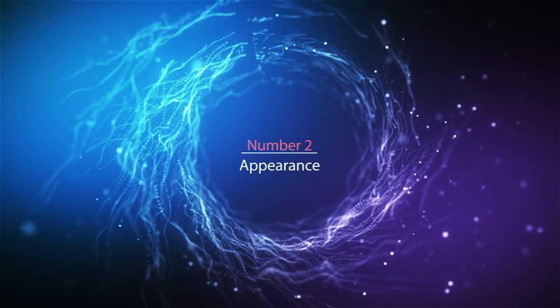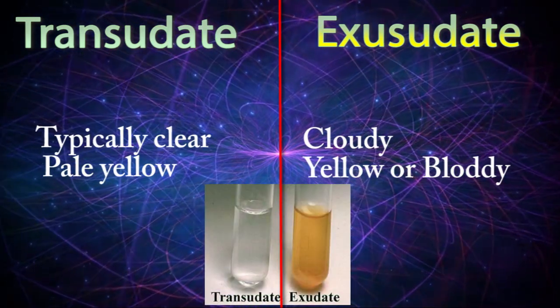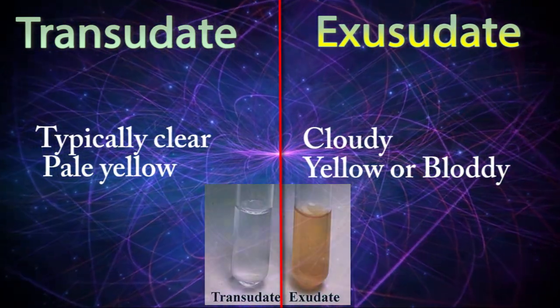Difference number two: appearance. Transudate usually gets really clear to pale yellow color, but exudate takes cloudy yellow or bloody color.